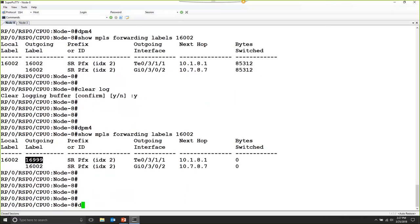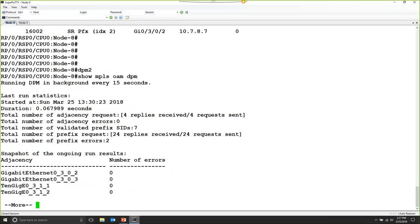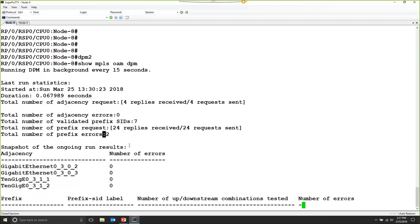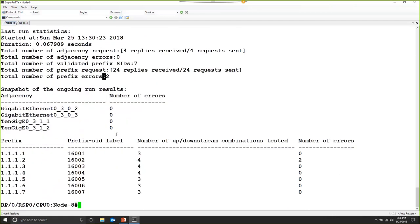Now, if we take a look at the operational data from DPM, we can see that the router has now detected two prefixed errors in the latest iteration. And if we look at the breakdown, the errors are associated with the testing done for the LSP to router number 2.